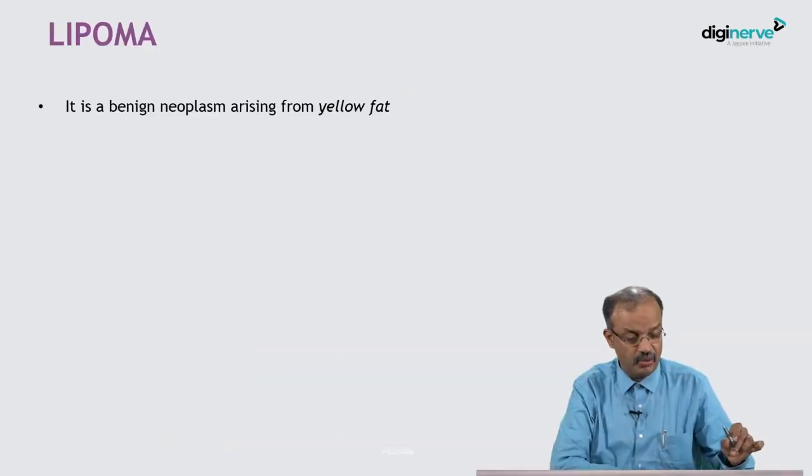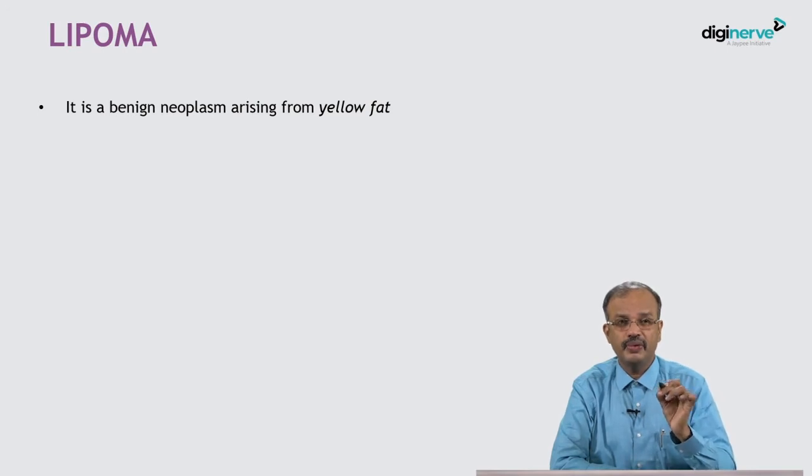Lipoma. So what is lipoma? It is a very common condition which we come across. It is a benign neoplasm arising from yellow fat. Adult human beings have mainly yellow fat, whereas brown fat is commonly found in the fetus and not in adults. So a benign tumor arising from the yellow fat is called a lipoma.